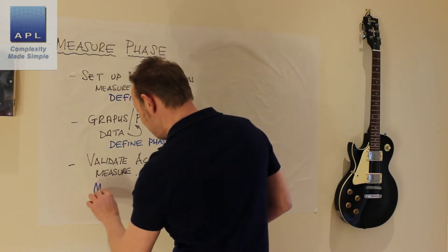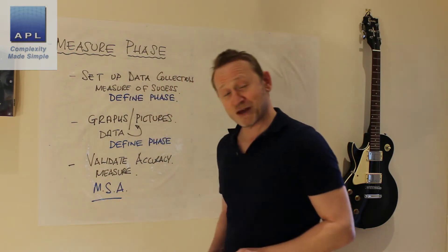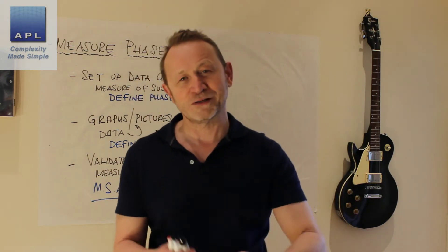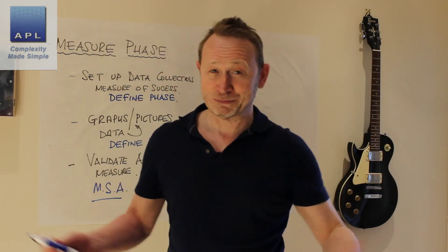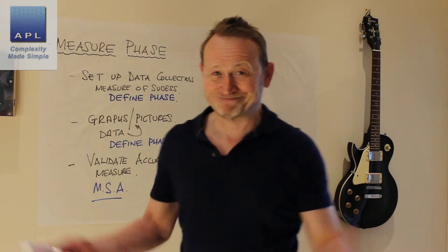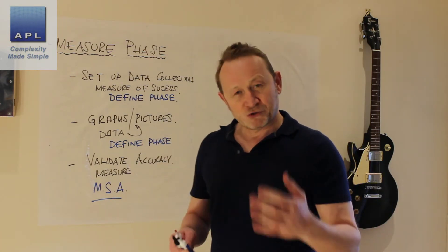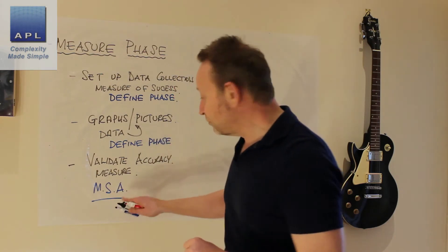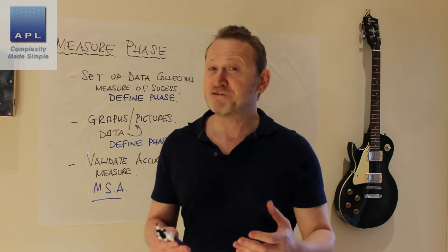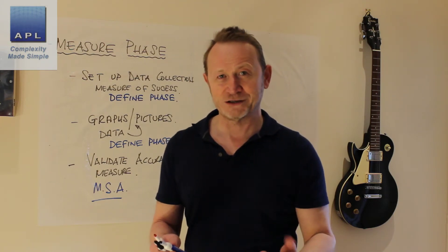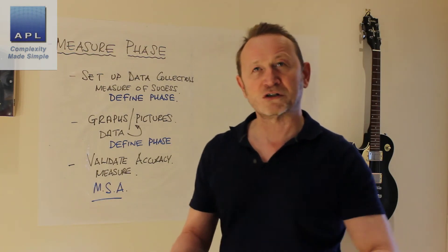This might mean you have to do an MSA — a Measurement System Analysis. If the MSA tells you there's a problem, then job one is to fix that problem, because if you can't measure it properly you can't do the project. Even when you don't have to do a formal MSA, you still have to validate the accuracy of the data.